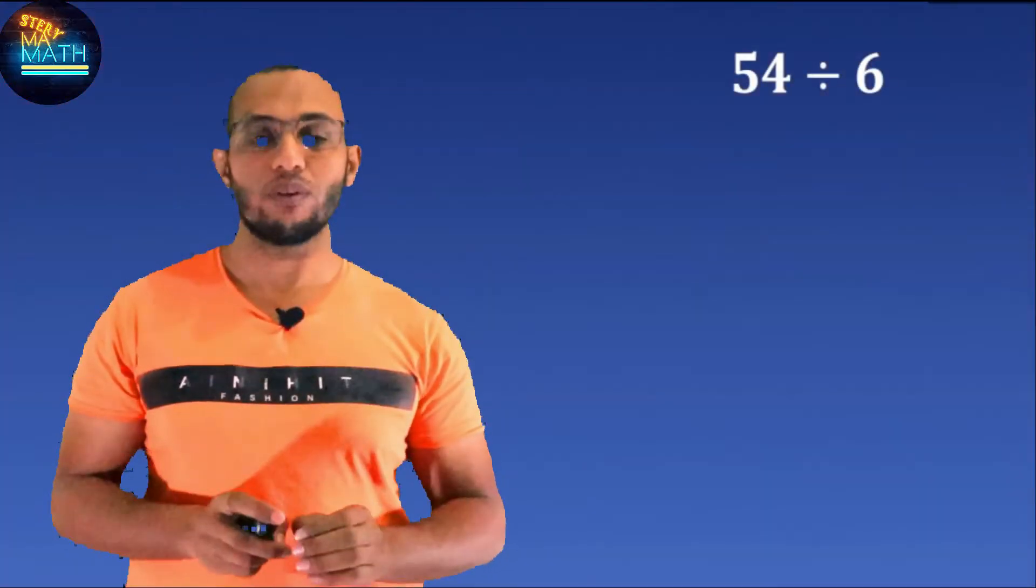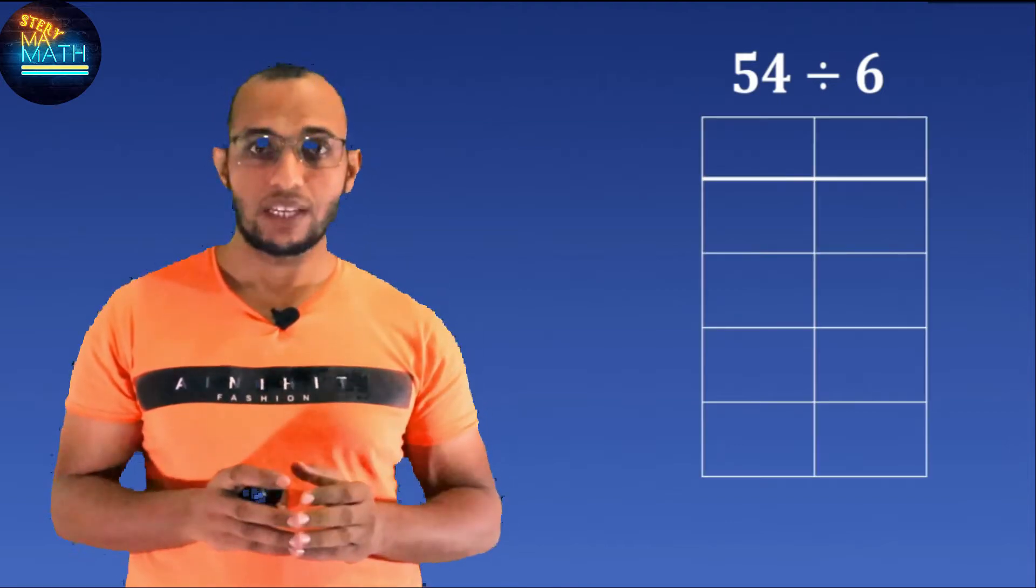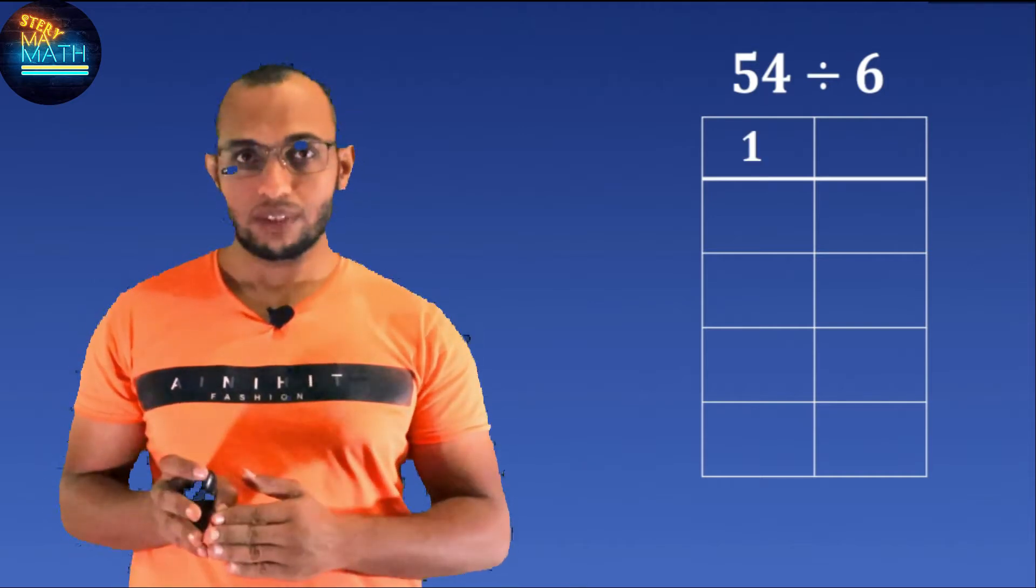We have a table to represent the numbers. The left-hand column is for the parts. It's supposed to start with one, and the right-hand column is for the divisor, six, which means one part represents six.